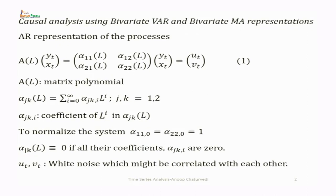The AR representation of the process is defined as A(L)[y_t, x_t] = [α₁₁(L), α₁₂(L); α₂₁(L), α₂₂(L)][y_t, x_t] = [u_t, v_t]. Here A(L) is a 2×2 matrix polynomial, where α_jk(L) = Σᵢ₌₀^∞ α_jk(i) L^i for j,k = 1,2, and α_jk(i) is the coefficient of L^i in α_jk(L).